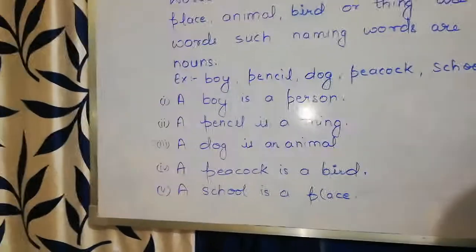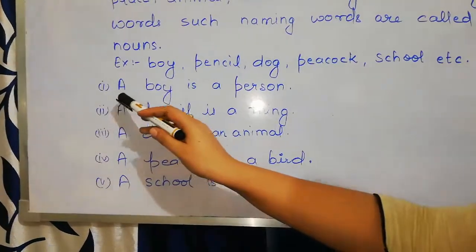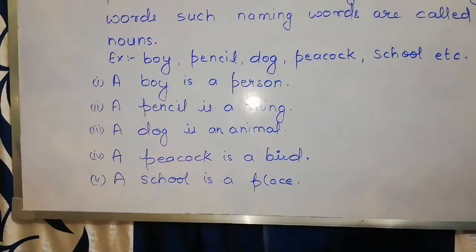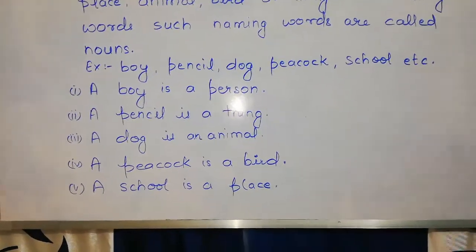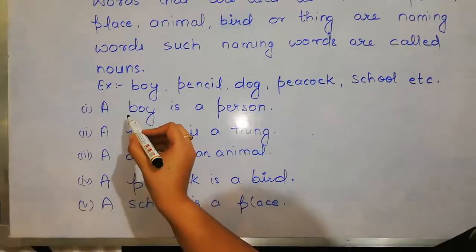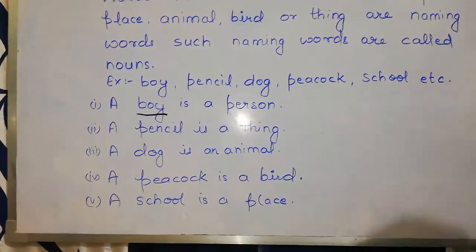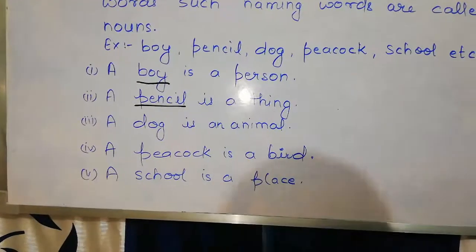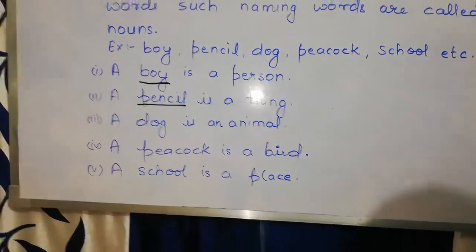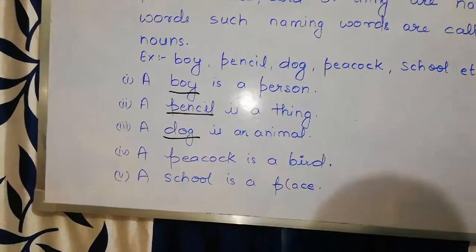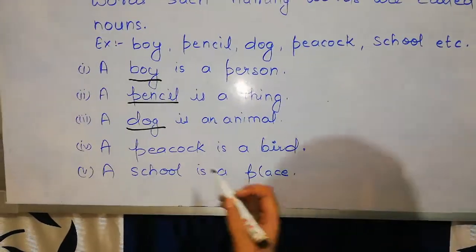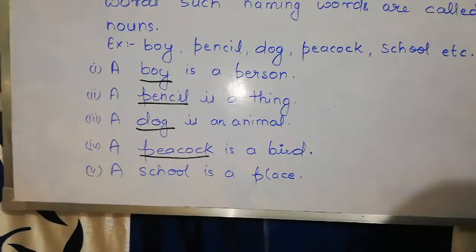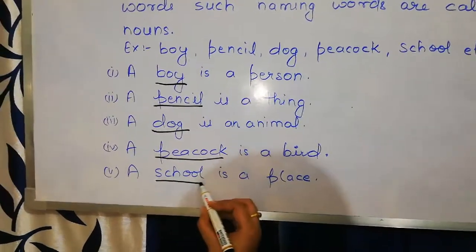Now we will explain the examples in detail. Number 1: a boy is a person — boy is a naming word. Number 2: a pencil is a thing — pencil is a naming word. A dog is an animal — dog is a naming word. A peacock is a bird — peacock is a naming word. A school is a place — school is a naming word.